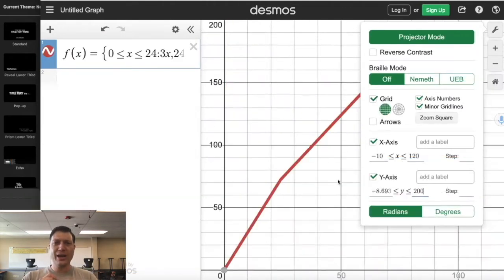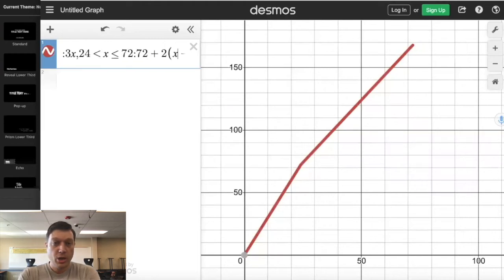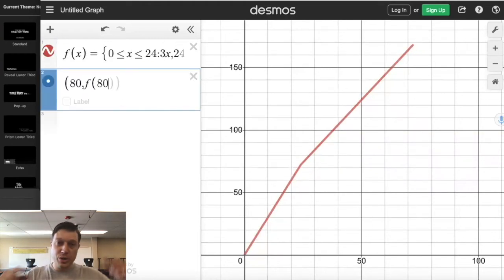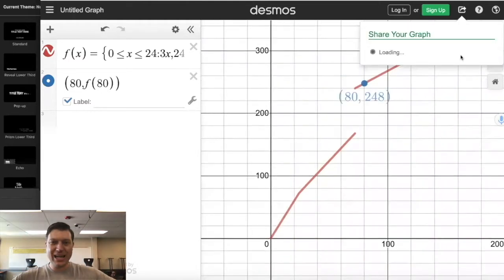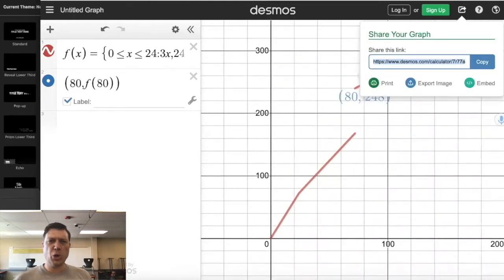So Google it or slow this video down and watch it slowly step by step so that you can see how the function for number two lines up with what got typed into Desmos. Of course, you can always do that.